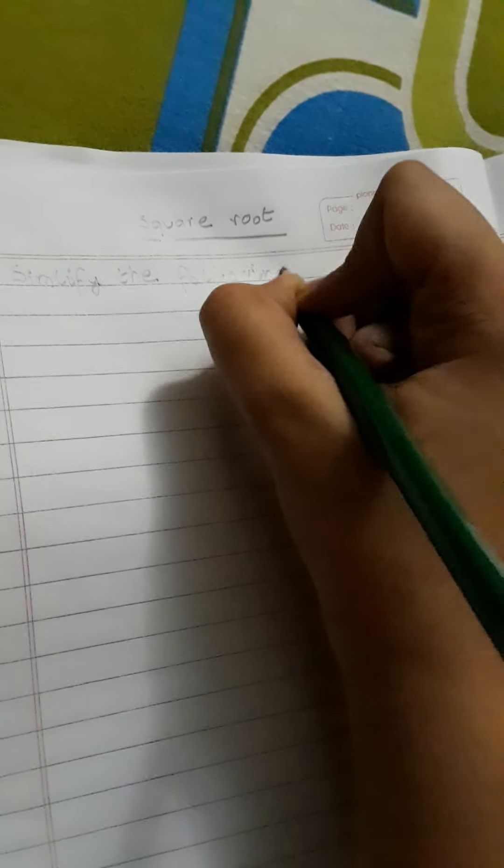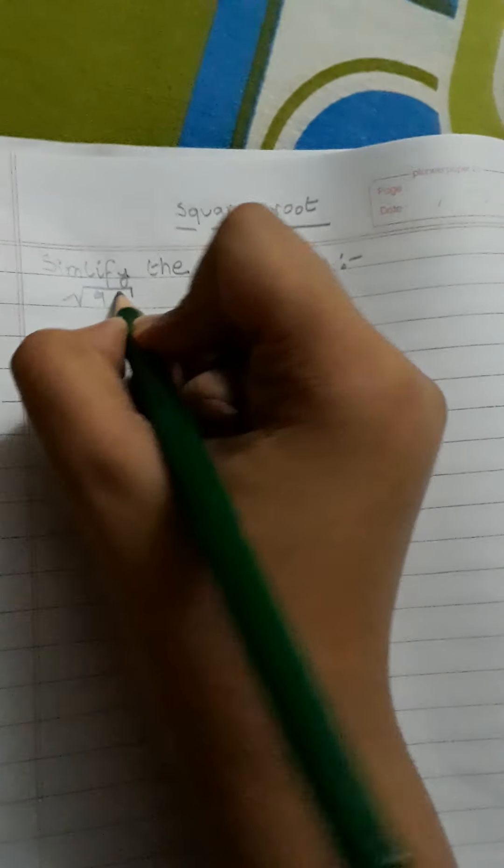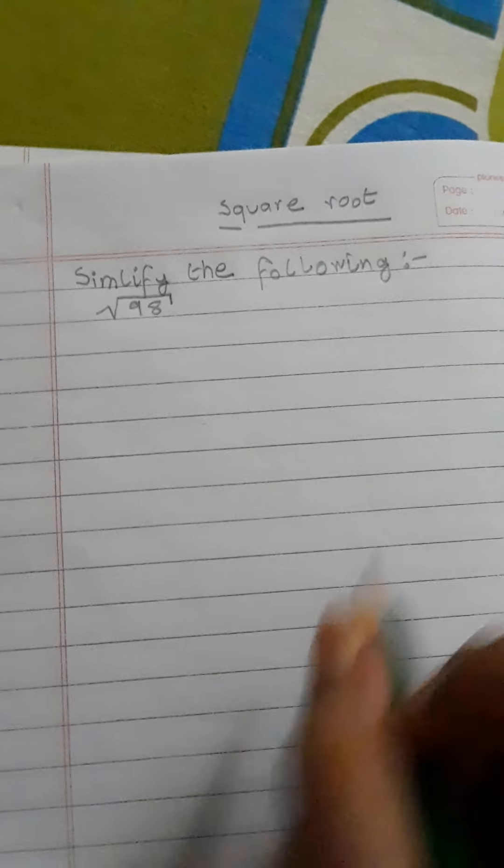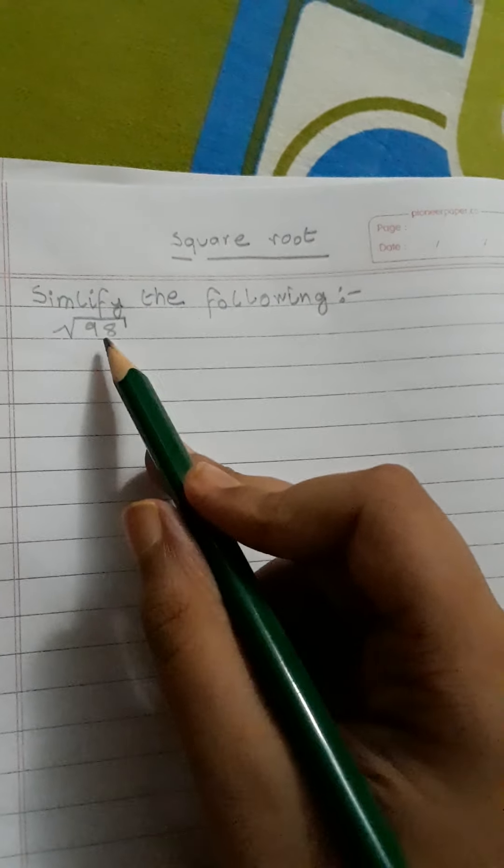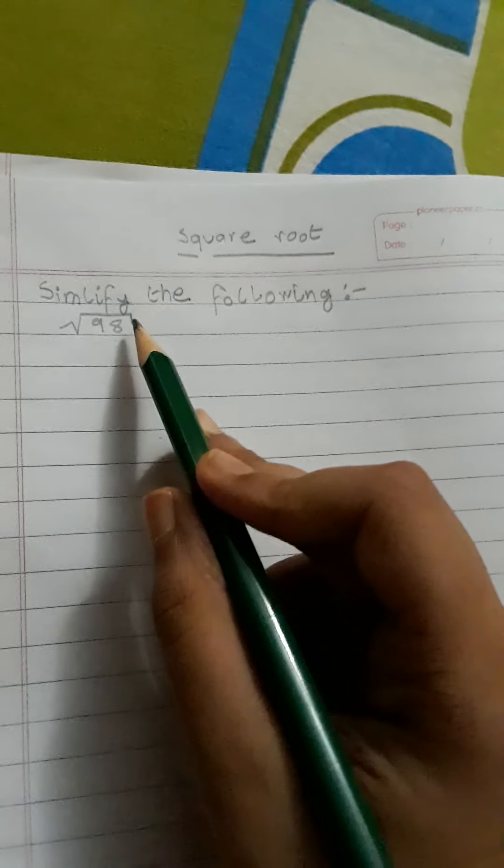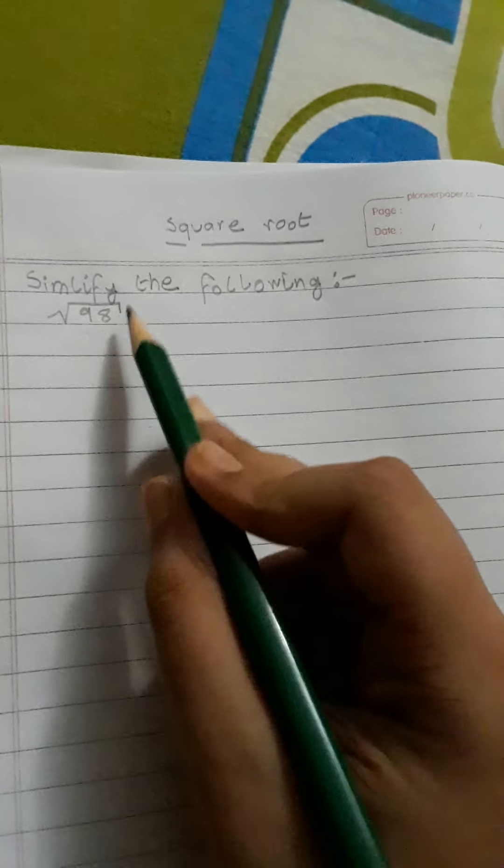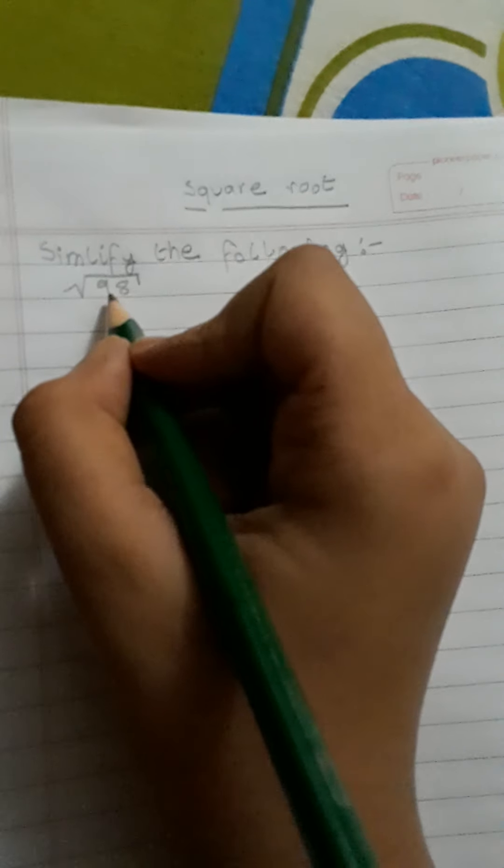Simplify the square root of 98. Now you all know that 98 is not a square number, so we cannot solve this directly. So now first, what is a square number?